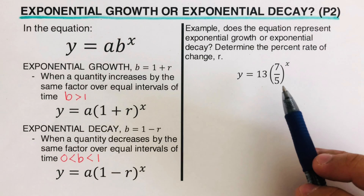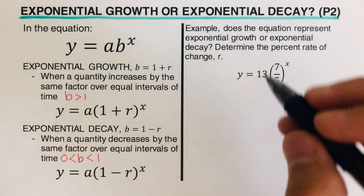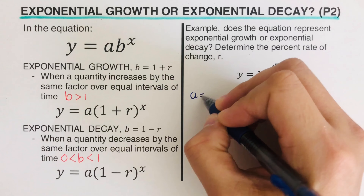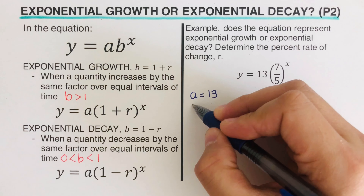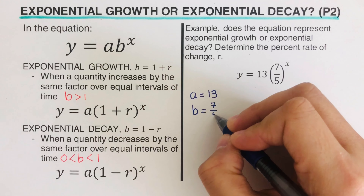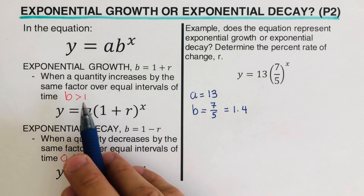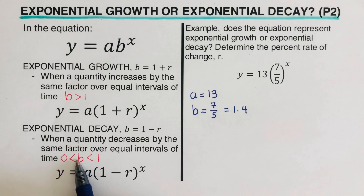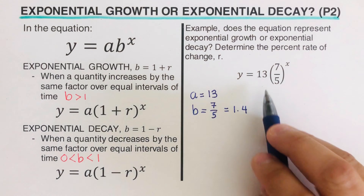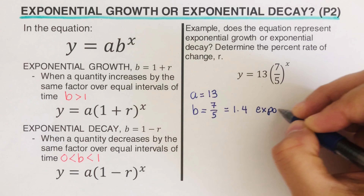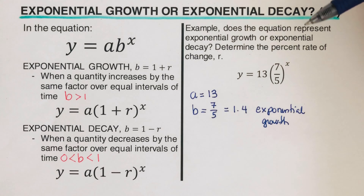Let's take this first example: y = 13 · (7/5)^x. Our initial value 'a' is 13. Our b is 7/5, which is 1.4. Since 1.4 is greater than 1, this equation is an example of exponential growth.